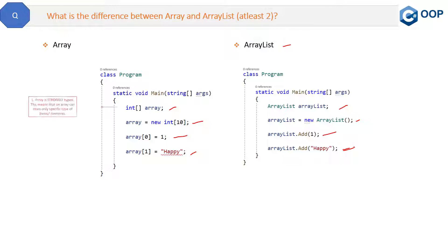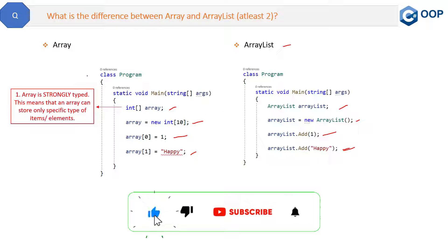So that is the two codes. Now see what are the differences. First thing is array is strongly typed. This means that an array can store only specific type of items or elements. So if you see here, we are having only the type of integer in this array. So like in the last line I have tried to add a string to this array, so this line is showing that this is a compile time error and it will not allow to add a string to the integer type array.